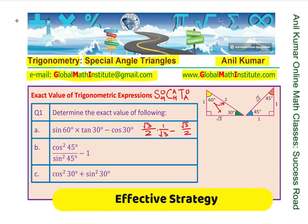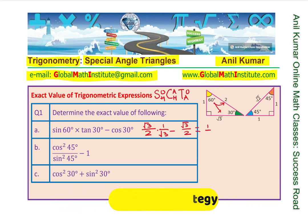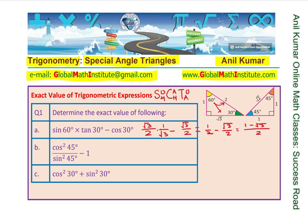You can now simplify. The square root 3 terms cancel, and we get one half minus square root 3 over 2. Taking a common denominator of 2, we write 1 minus square root 3 in the numerator over 2. So that is how we get the first value.